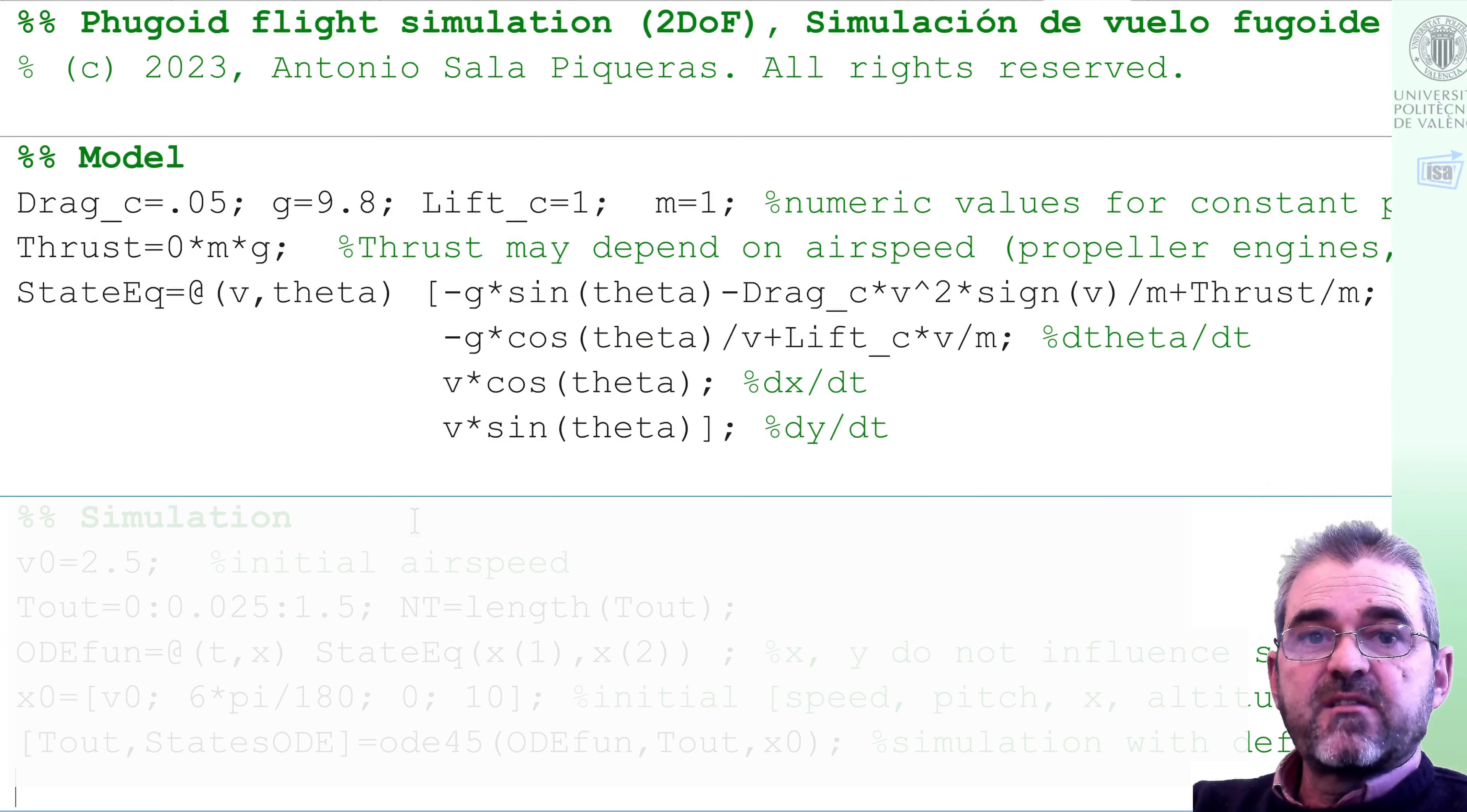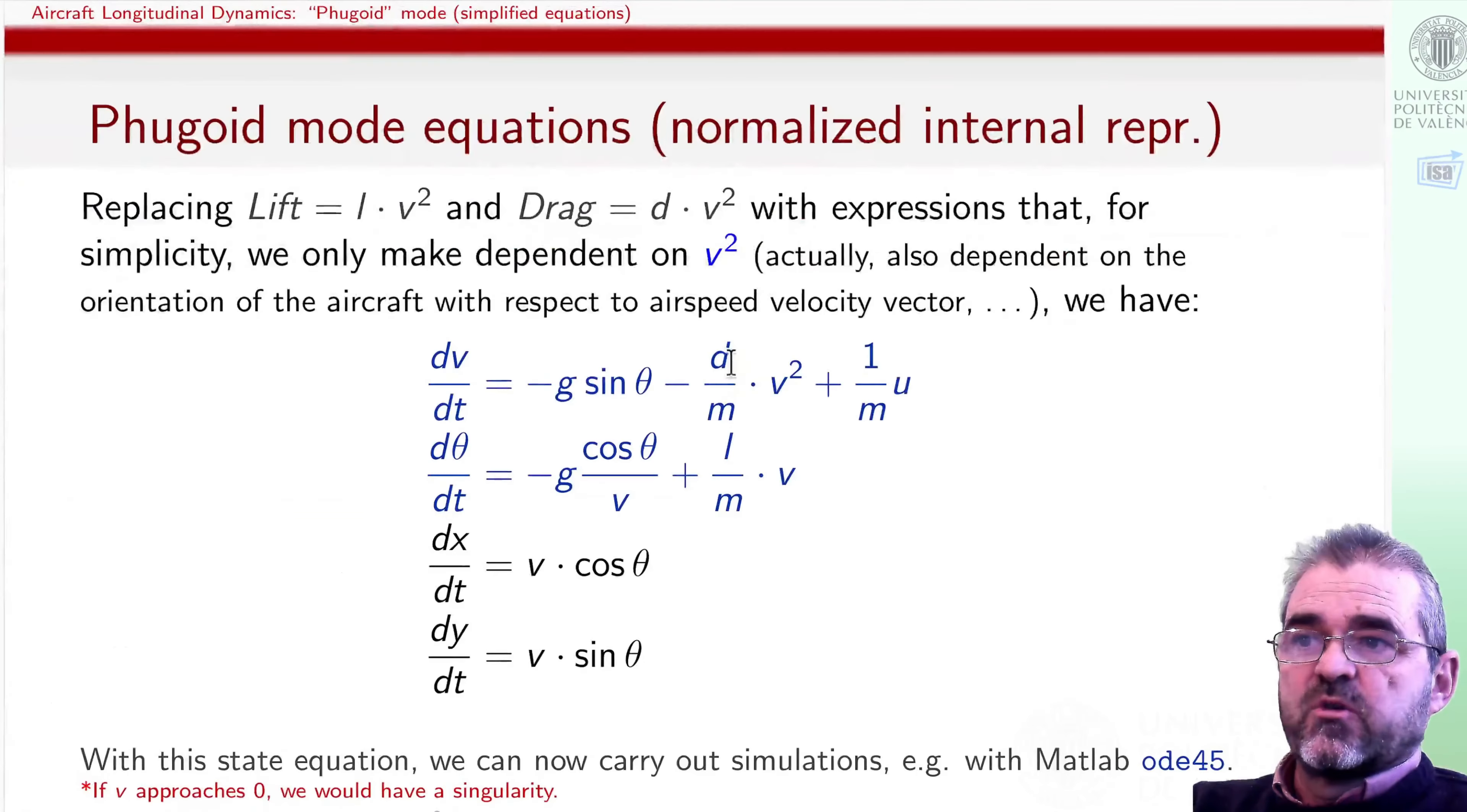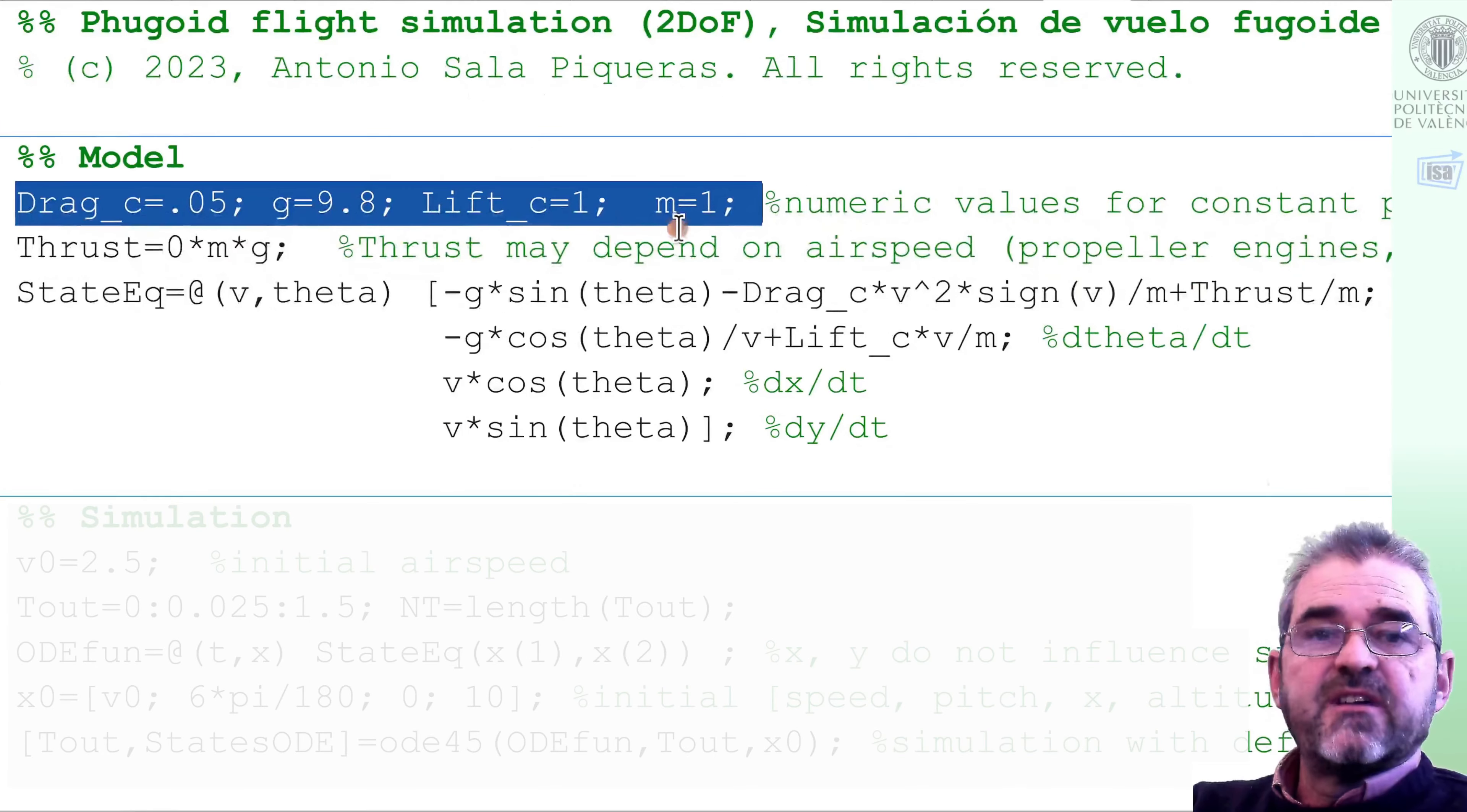How do we insert the model? Well, we'll first start by giving numerical values to the constant parameters in the model equations. So we need values for mass, gravity, and lift and drag coefficients. So I invented these ones. This has no relationship whatsoever with any existing commercial aircraft. It's just an invention of mine to be able to compile this code.